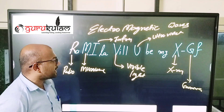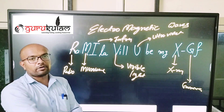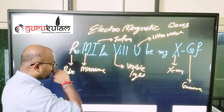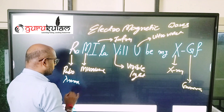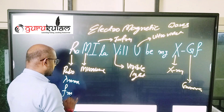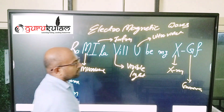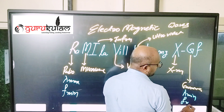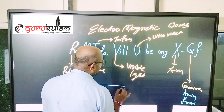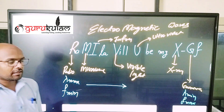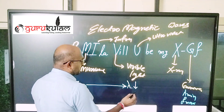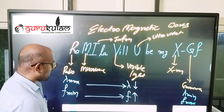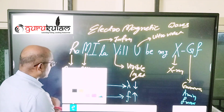This is the order. Radio is at the start and gamma is at the other end. This is the sequence — radio has the maximum wavelength (lambda) and minimum frequency. For gamma, the lambda is minimum and the frequency is maximum. So when going from radio to gamma, the wavelength decreases but the frequency increases.